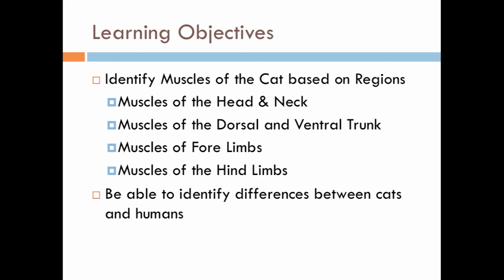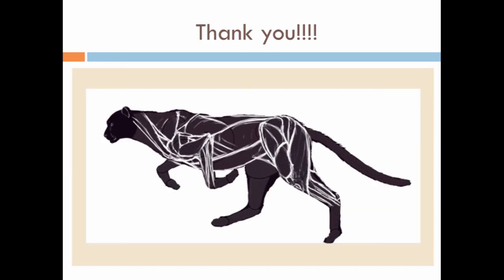So our learning objectives that we went over today are muscles of the cat based on regions: the head and neck, the dorsal and ventral trunk, the forelimbs and the hind limbs, and then some of the differences between cat and human muscles. Thank you for listening today — have a great day of learning.